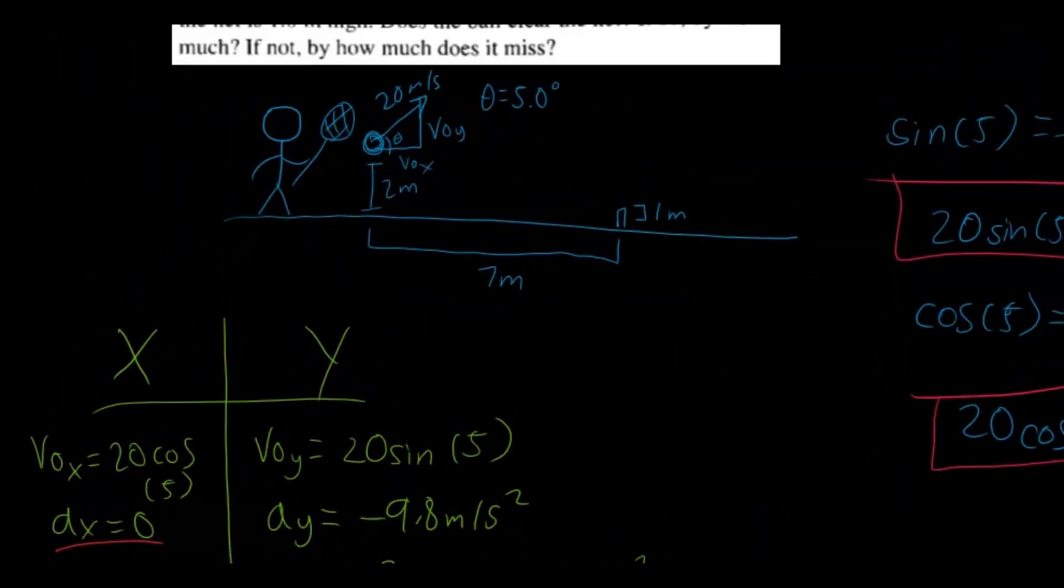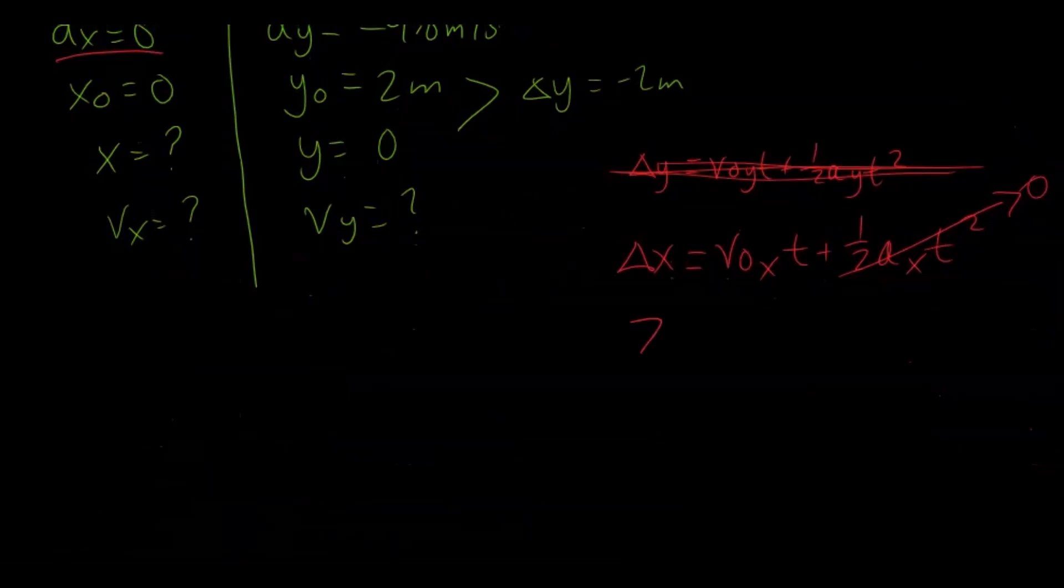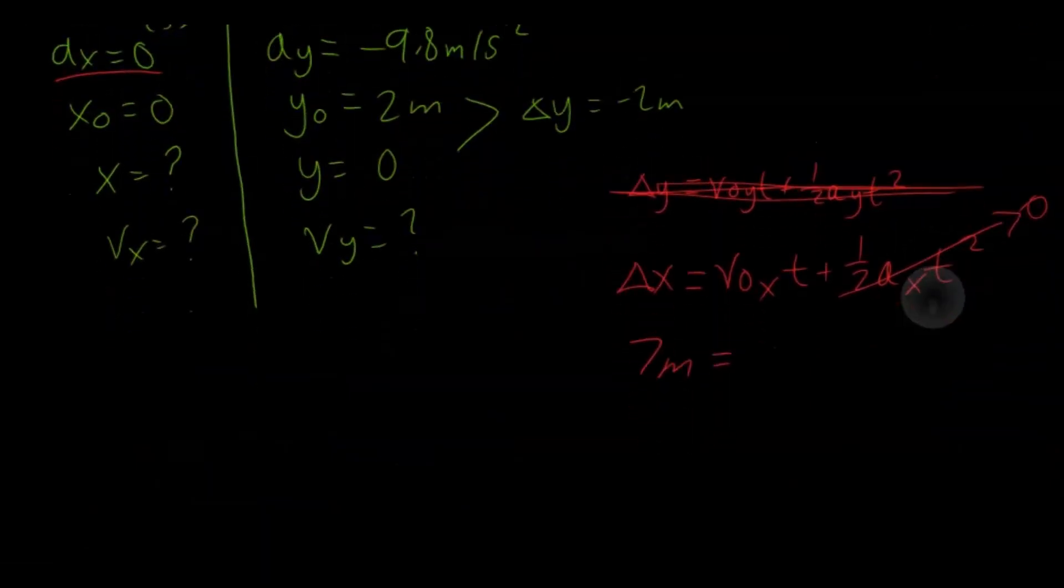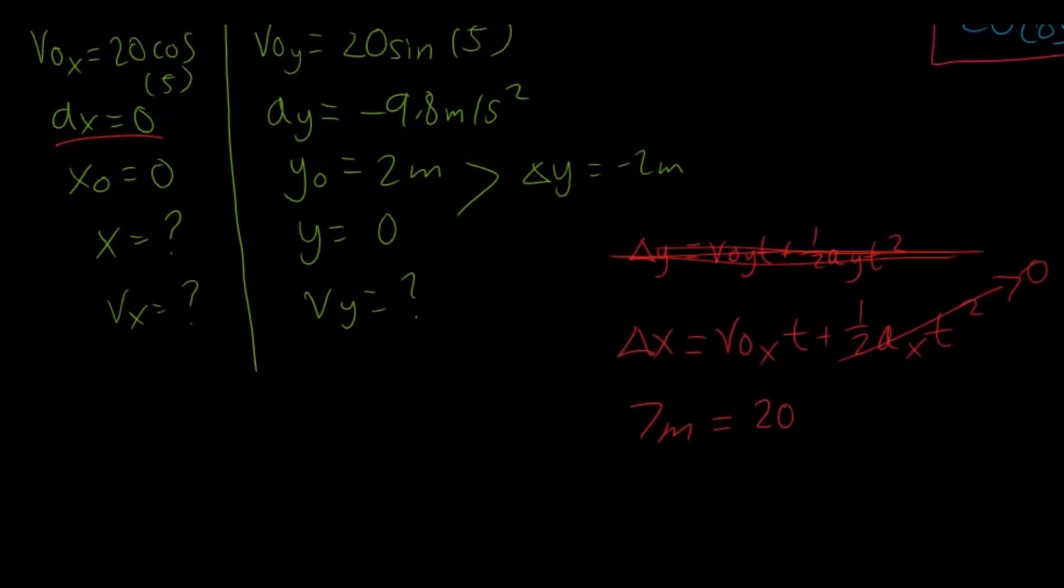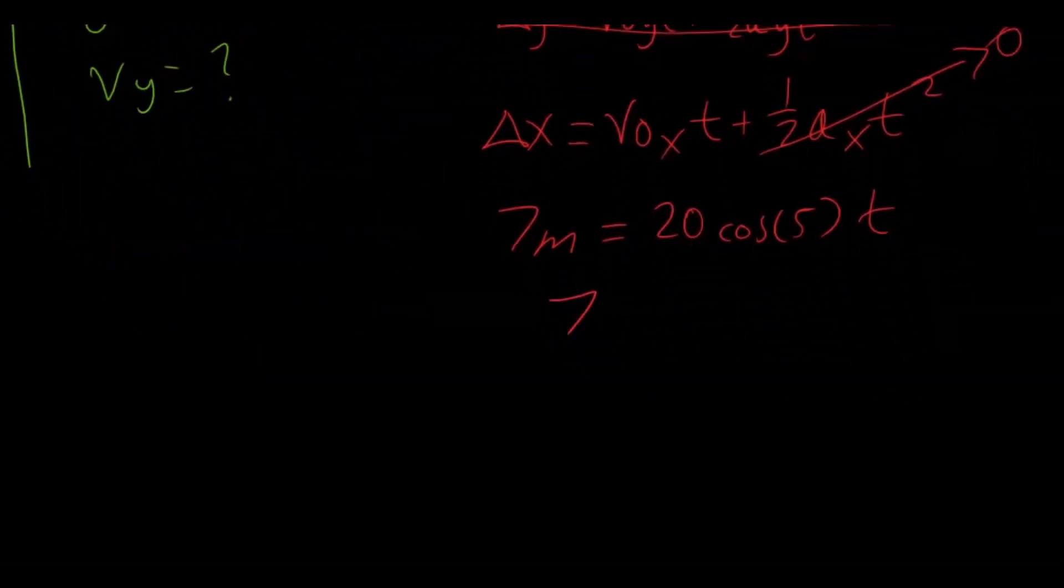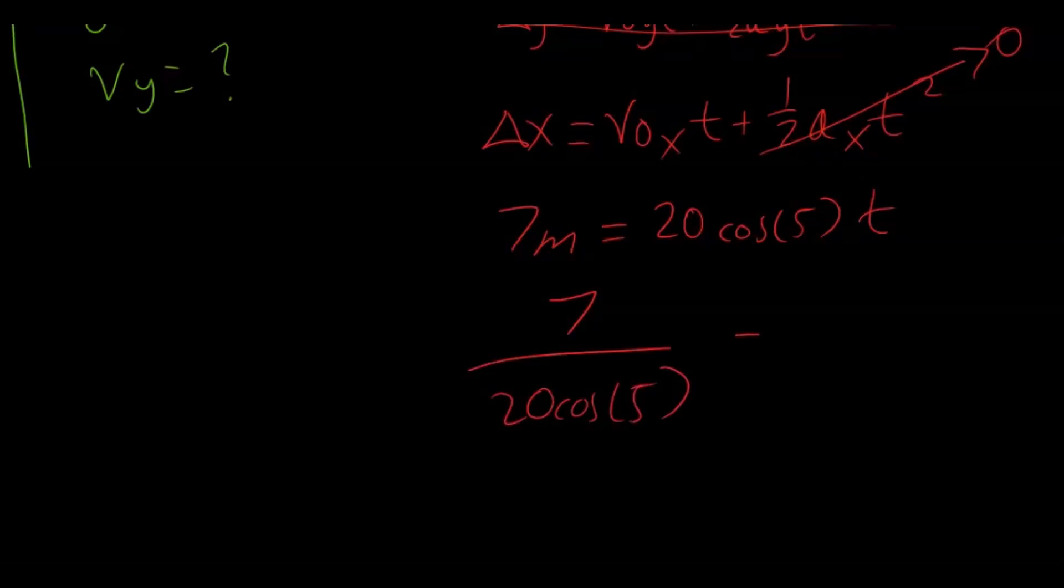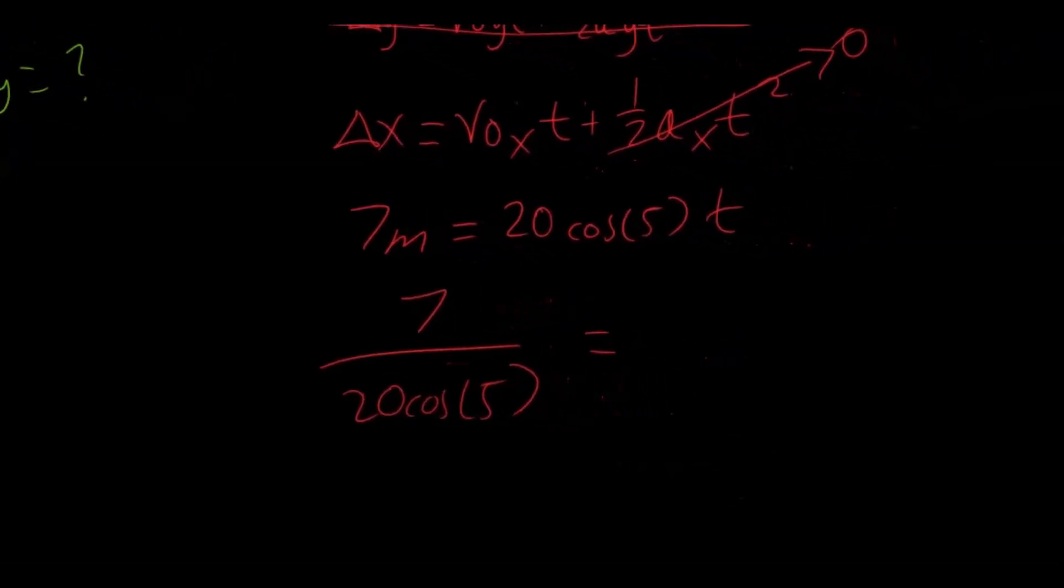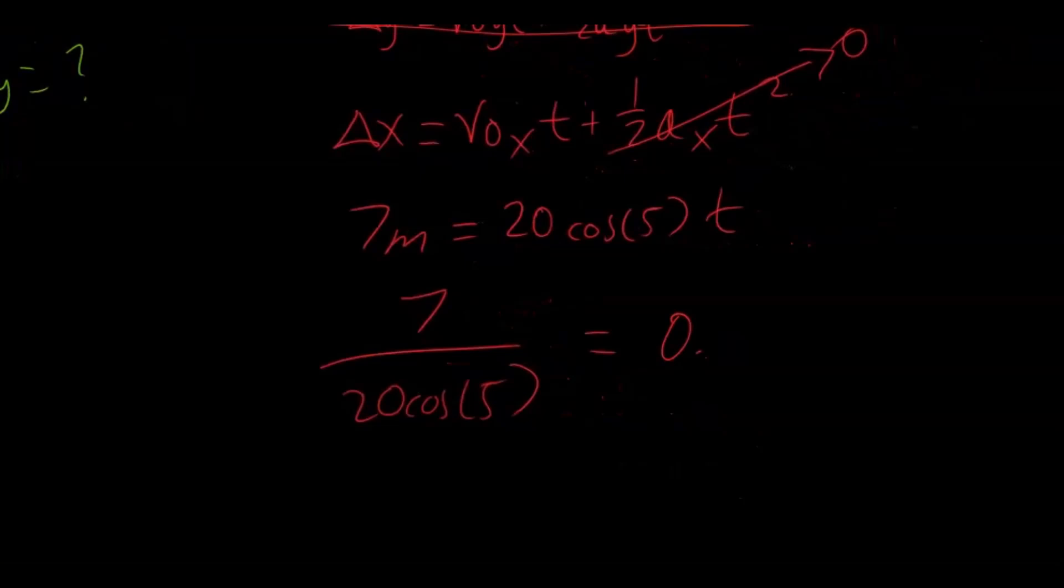So that means we could set up as change in x equals the initial velocity in the x direction times time plus 1 half and then the acceleration t squared. But this entire thing is going to be 0, because in the x direction, the acceleration is 0. So now we're just left with this. So now we're going to find the time. And the change in x is just 7 meters, right? Because you want to find the amount of time it takes for that ball to travel 7 meters in horizontal distance. So our change in x, 7 meters, equals the initial velocity in the x direction, which is 20 times cosine 5 times t. So now we can just do 7 divided by 20 times cosine 5, and we get a value of around 0.35 seconds.